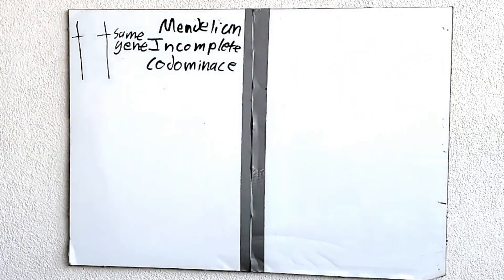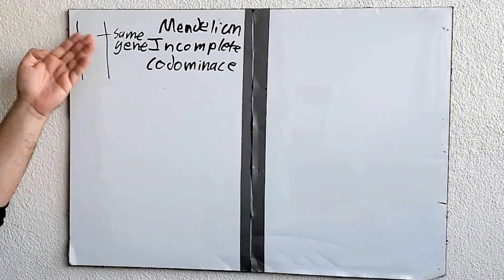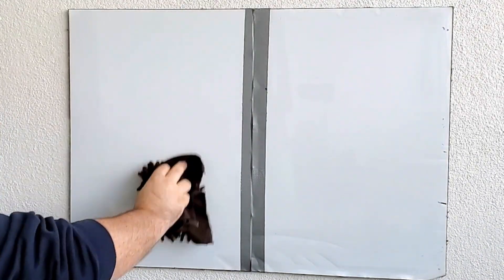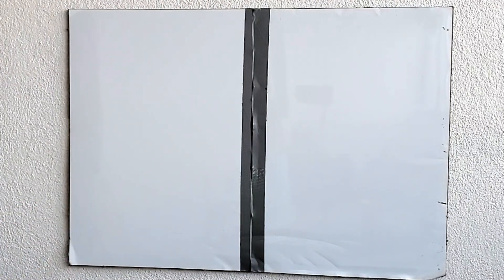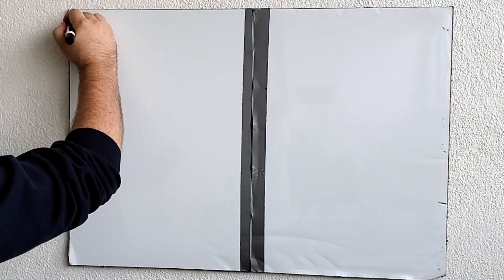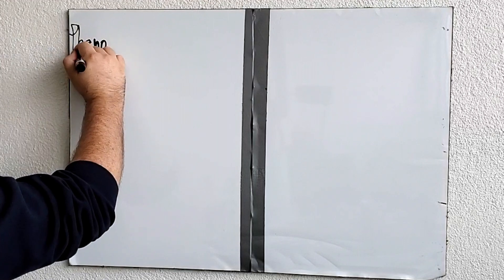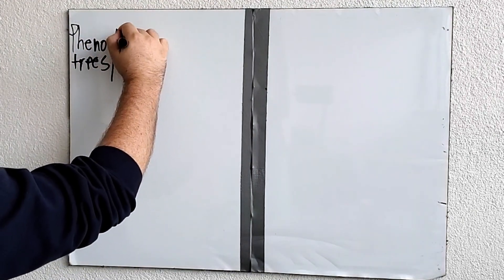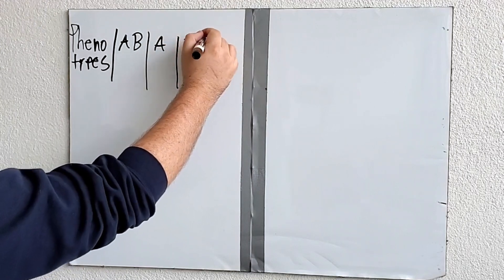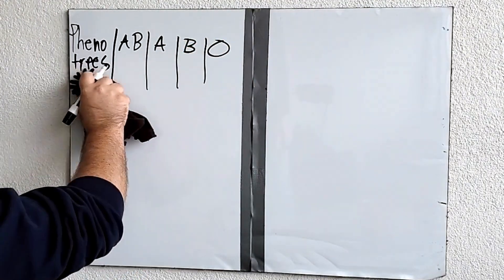Sometimes there's more than just two possible alleles. When you look at something like hair type, there's only two alleles: a straight-haired allele and a curly-haired allele. But what if you look at something more complicated? The first example we're going to look at is something that has multiple alleles — more than two alleles — and that's blood type. We like to use blood type as an example because with blood type there's only three alleles, so it's not too complicated yet.